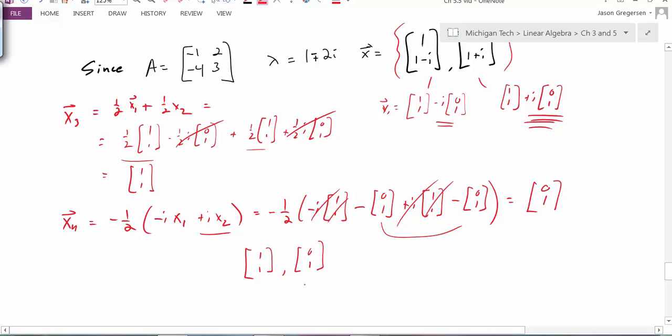These two vectors are certainly in the eigenspace, because I formed them as a linear combination of the eigenspace. But by inspection, I can look at these and say that they're not multiples of each other. Therefore, they must be linearly independent.